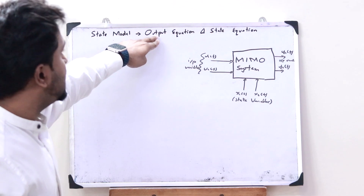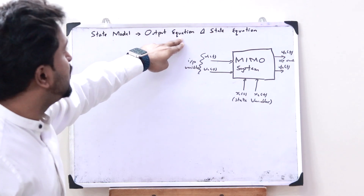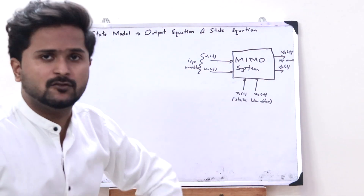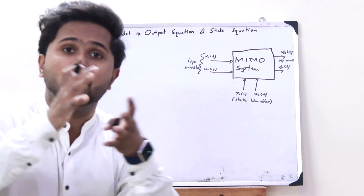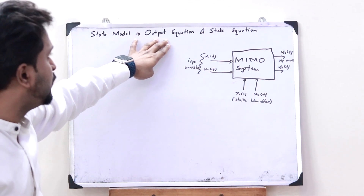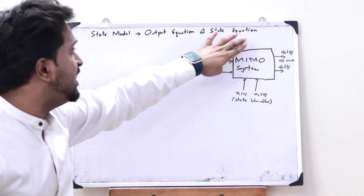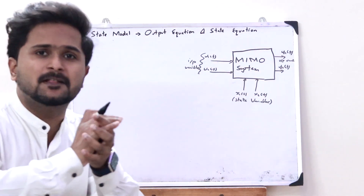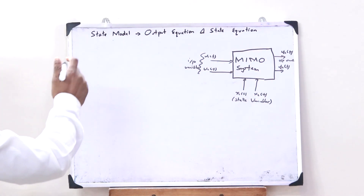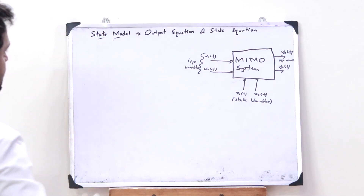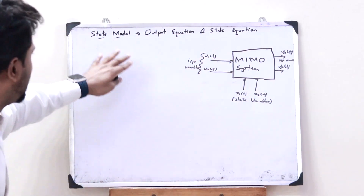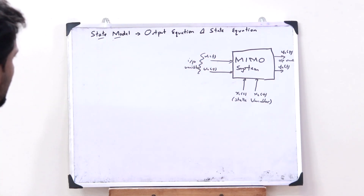The first one is the output equation and the second one is the state equation. The combination of these two equations — the output equation and the state equation together — is simply what you refer to as a state model.